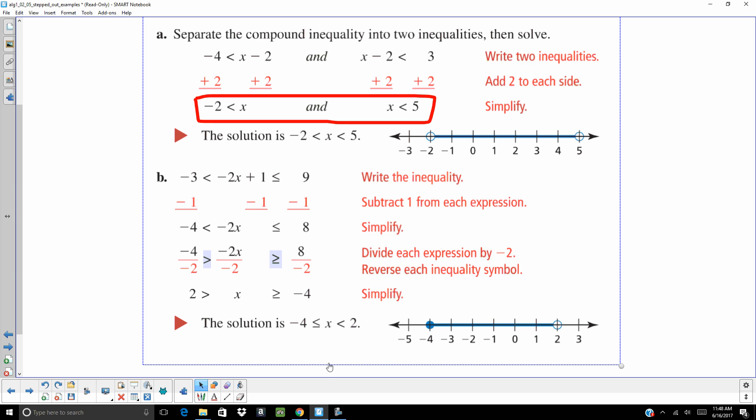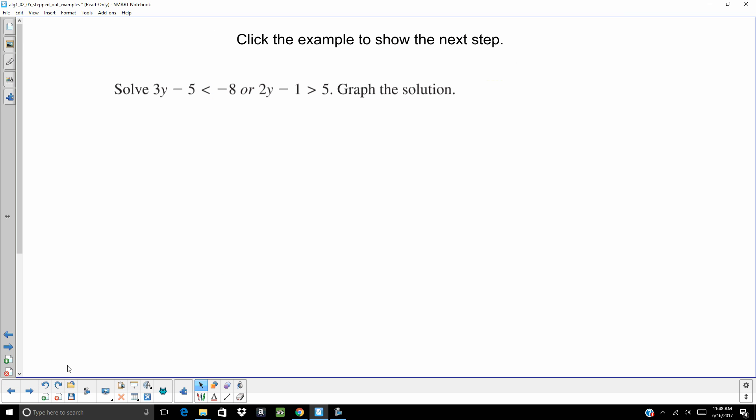And you're going to have a closed dot at negative 4. So instead of separating it into two inequalities this time, they just kept it as 1. But they did it to the left, to the middle, and to the right.